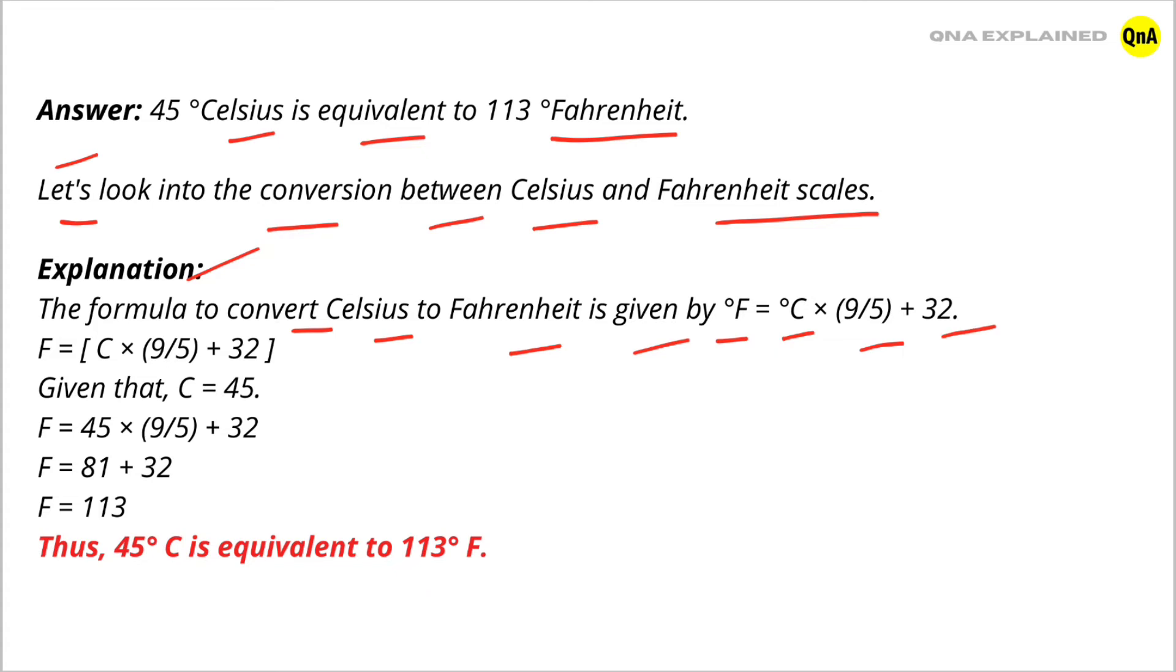Given that C = 45, put the value of Celsius in this formula. F = 45 × (9/5) + 32, which is equal to 81 + 32.